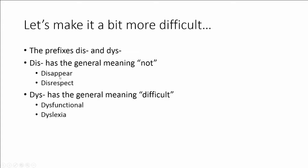Dis spelled D-I-S has the general meaning of not. So let's look at the word disappear. Appear means to be seen. So if we add the prefix dis, it makes the word disappear meaning not seen. Let's look at the word disrespect. The word respect means to admire someone. We put the prefix dis in front of it and now it means to not admire someone or disrespect them.